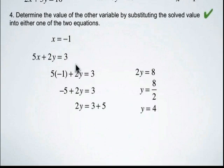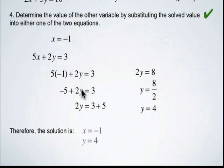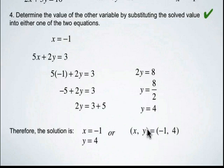We've completed step four. Our solution is x equals negative 1 and y equals 4, or as an ordered pair in x-y form: negative 1, 4. This means the intersection point for our linear system is negative 1, 4.